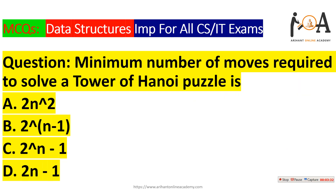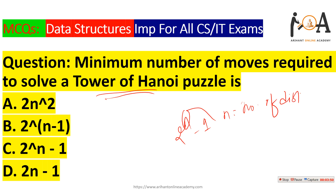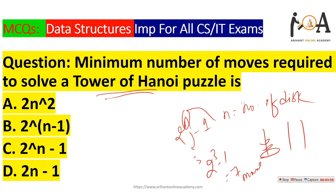The next question is: what is the minimum number of moves required to solve a Tower of Hanoi puzzle? To solve the Tower of Hanoi puzzle, the minimum number of moves is 2^n − 1, where n equals the number of disks. For example, if the number of disks is 3, then 2^3 − 1 = 7 moves are required to solve the Tower of Hanoi problem.